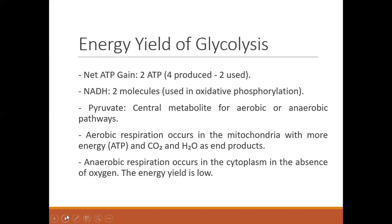Aerobic respiration occurs in the mitochondria with more ATP produced, because pyruvate is converted to acetyl-CoA through the pyruvate dehydrogenase complex, and then condenses with oxaloacetate in the citric acid cycle to form citrate. As it goes through that cycle, more ATP is generated, carbon dioxide is produced, and water is also produced as an end product. Anaerobic respiration occurs in the cytoplasm in the absence of oxygen, and the energy yield from anaerobic respiration is very low.